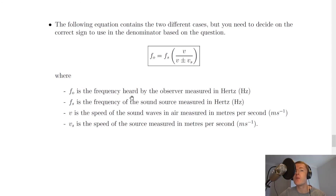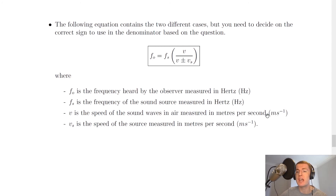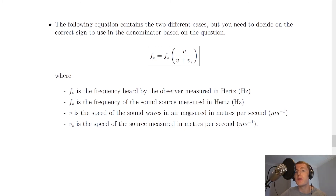In this equation: FO is the frequency heard by the observer measured in Hertz; FS is the frequency of the sound source measured in Hertz; V is the speed of the sound waves in air measured in metres per second; and VS is the speed of the source measured in metres per second. The speed of sound in air is 340 metres per second. Note that the Doppler effect can also be applied to light — if using light, you would use the speed of light for V rather than the speed of sound.